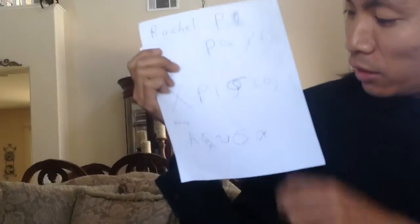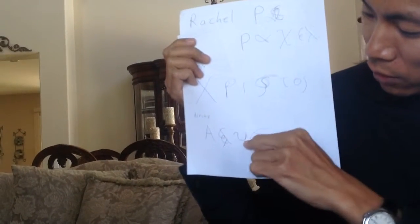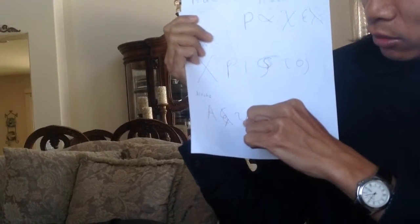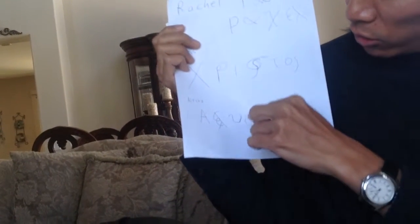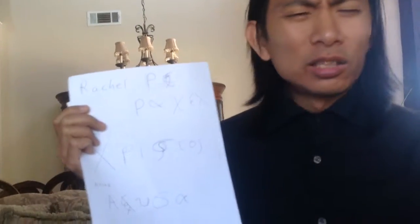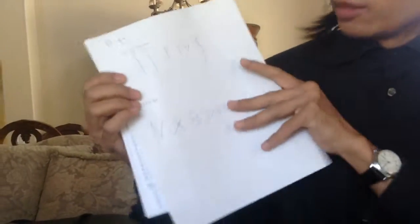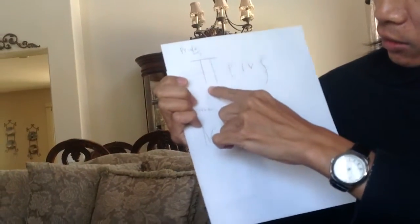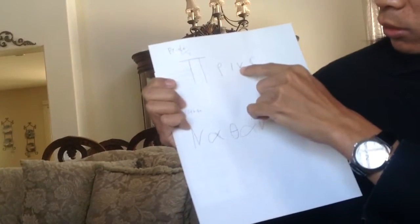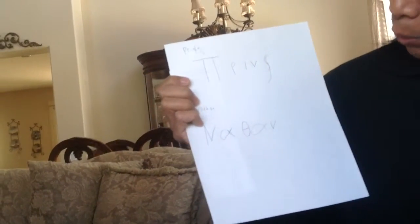Then we did Alicia: alpha, lambda, epsilon — in modern Greek that upsilon is pronounced like a 'y' — so it's A-L-Y, then sigma, alpha. There's no 'sh' sound in Greek so it's just 'Alisa.' Then Prince, spelled off the top: pi, rho, iota, nu, sigma.